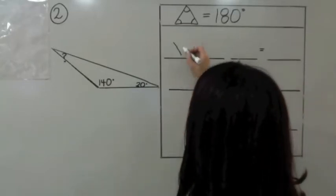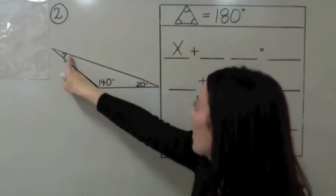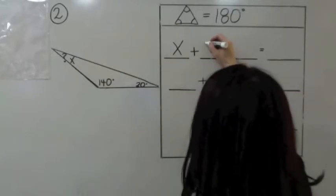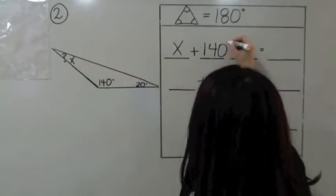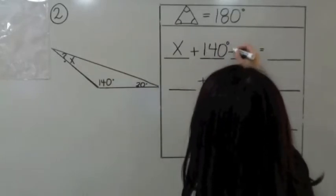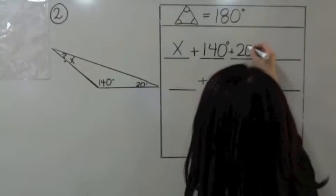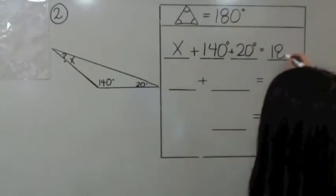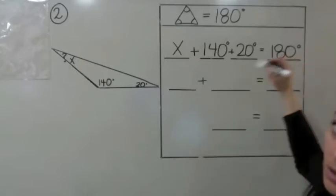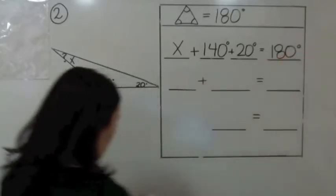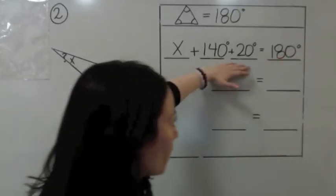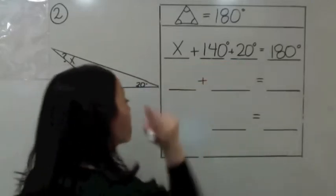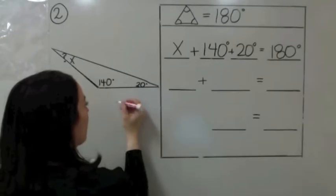Since we don't know what the angle is, we're going to use the letter X. We're going to add these angles together because there are three angles. So: X plus 140 degrees plus 20 degrees equals 180 degrees. We need to add these two angles together first before we can solve for X.